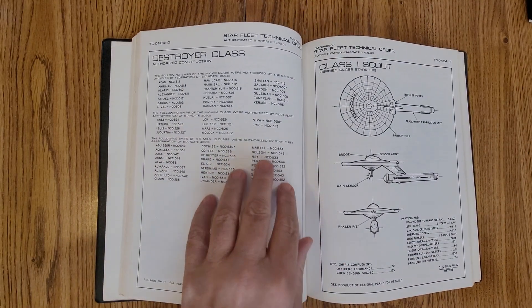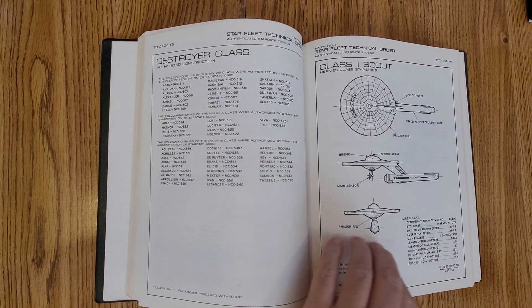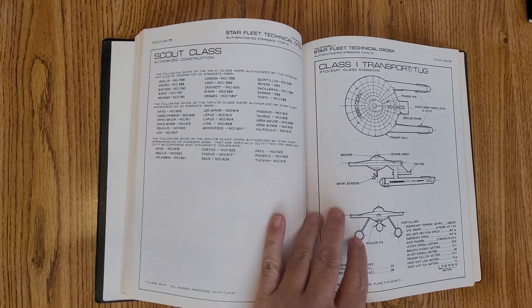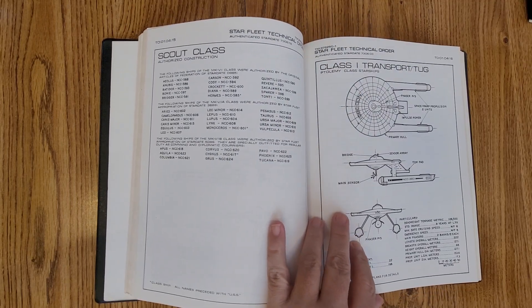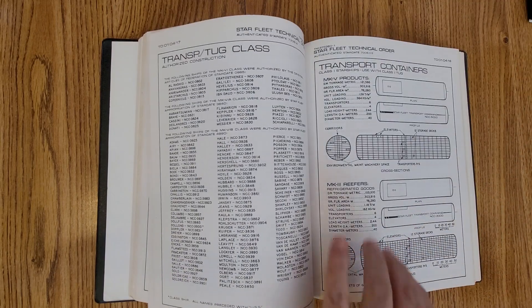Same thing with the Destroyer class. There's the Saladin, which it was pretty much named after. Here's your scout ship. Your transport, which was cool. And it does the same thing. It gives all your stats, your ranges, and everything down below.